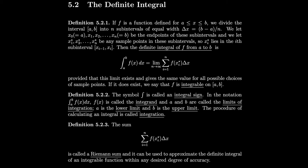The sum f of xi star times delta x from i equals 1 to n is called a Riemann sum. It can be used to approximate the definite integral of an integrable function within any desired degree of accuracy.